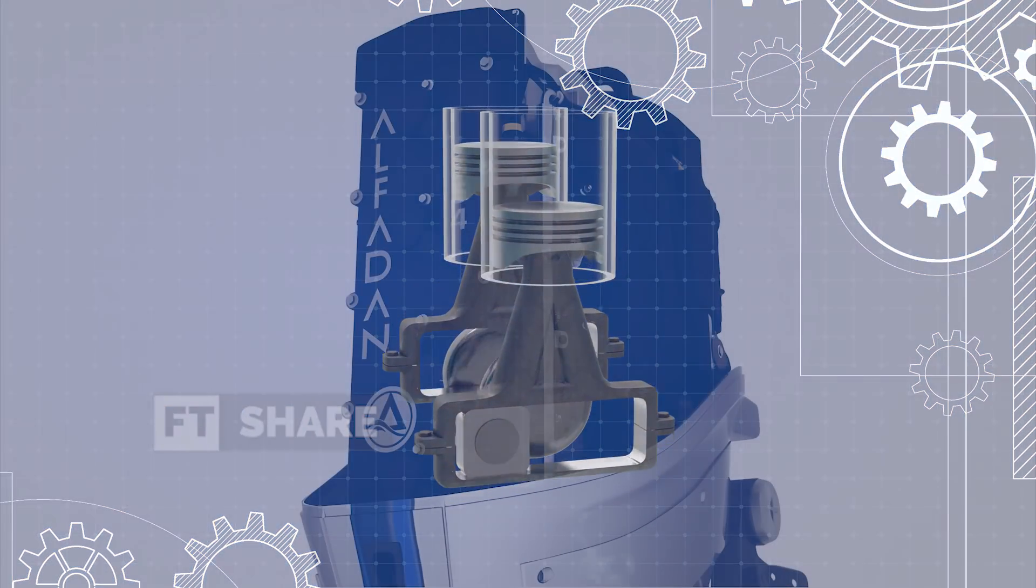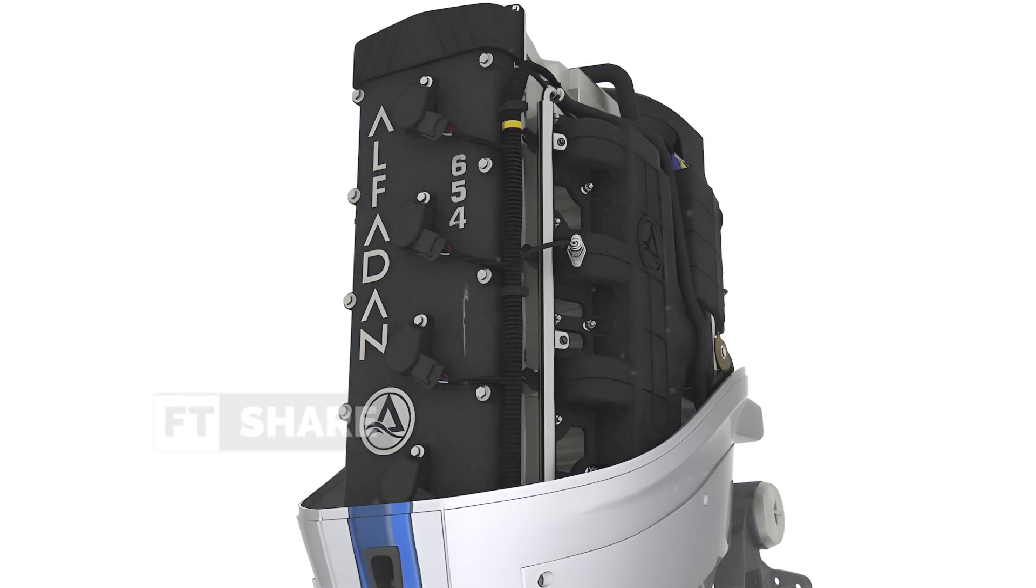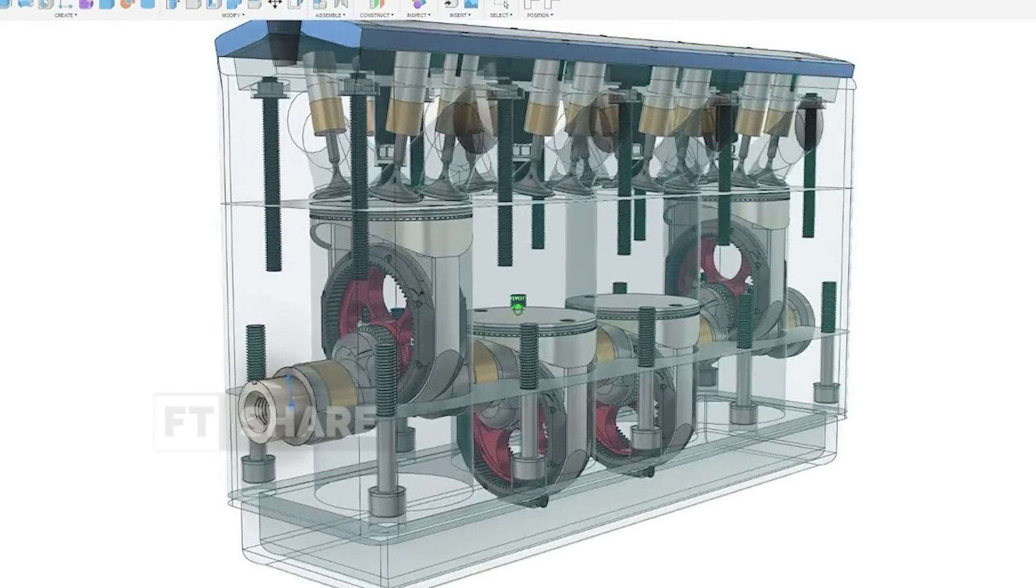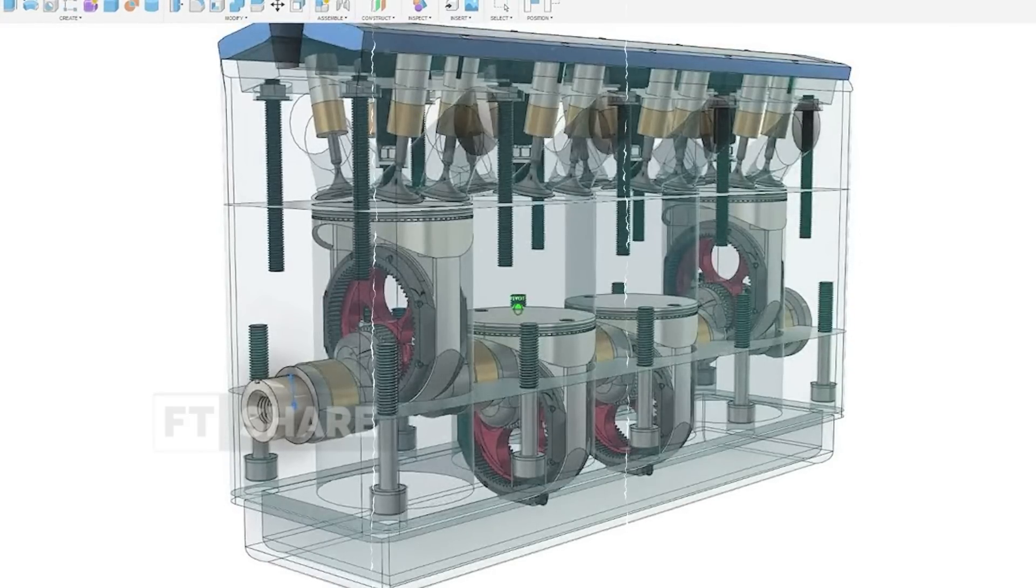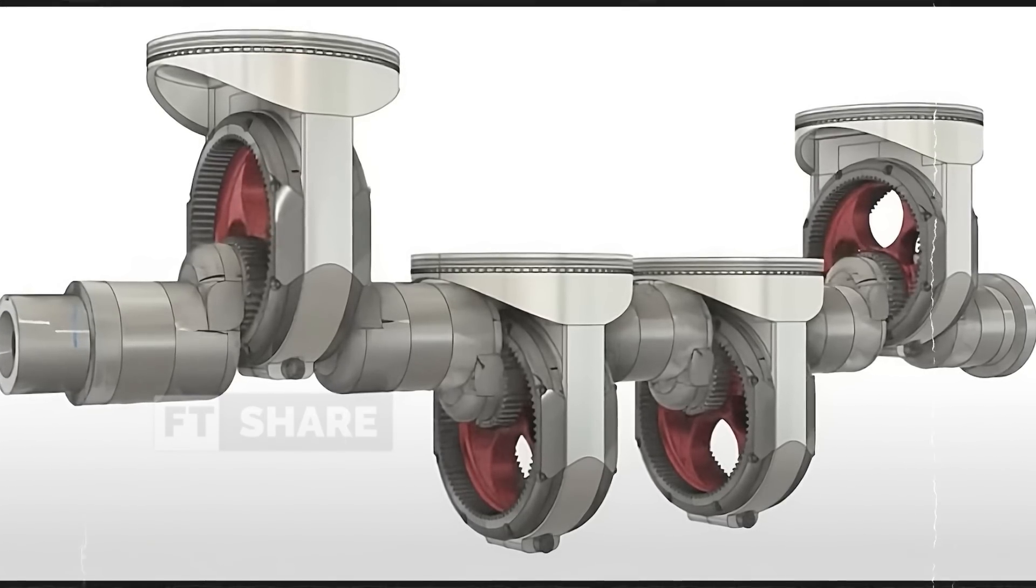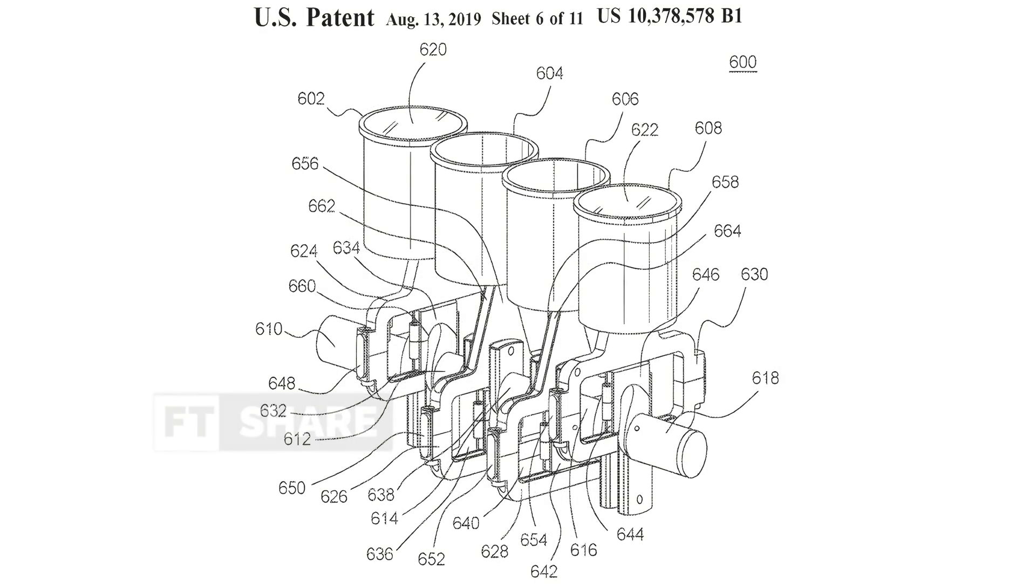However, despite this, a company named Alphadan, established two years ago, is currently working on developing the Scotch yoke engine using modern technology. They plan to introduce the Scotch yoke inline 4 engine to compete in the market soon, indicating its potential competitiveness in the future.